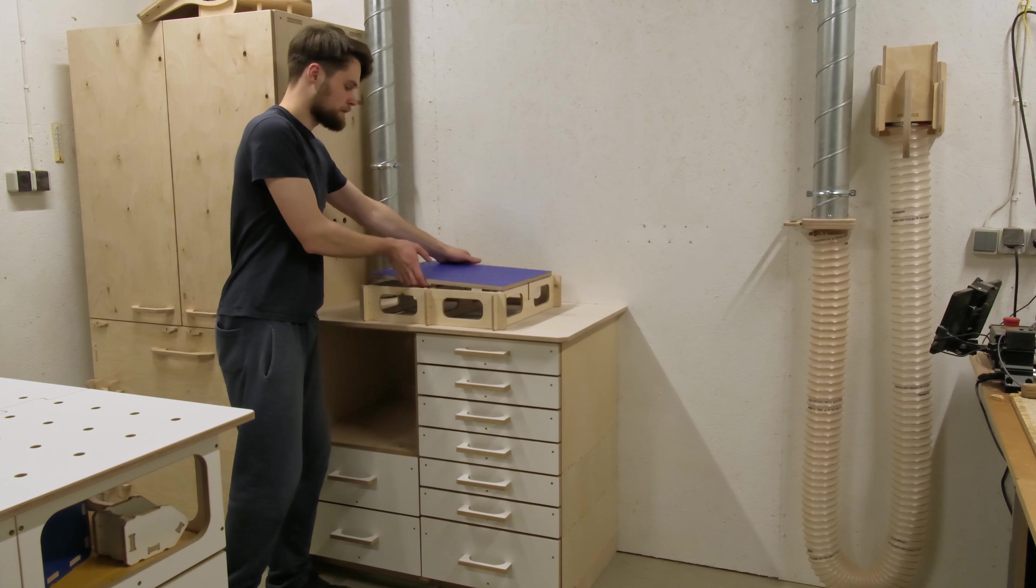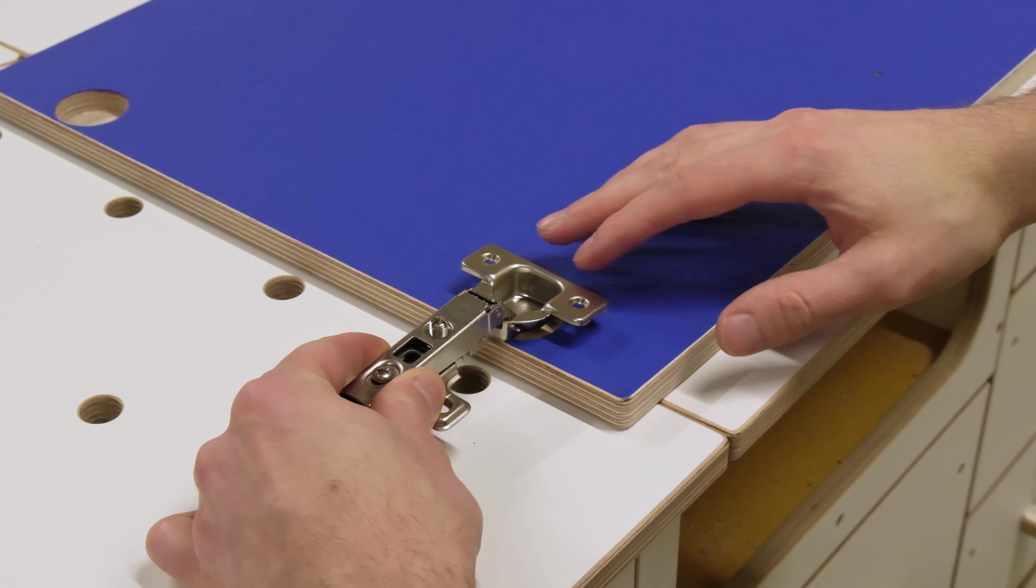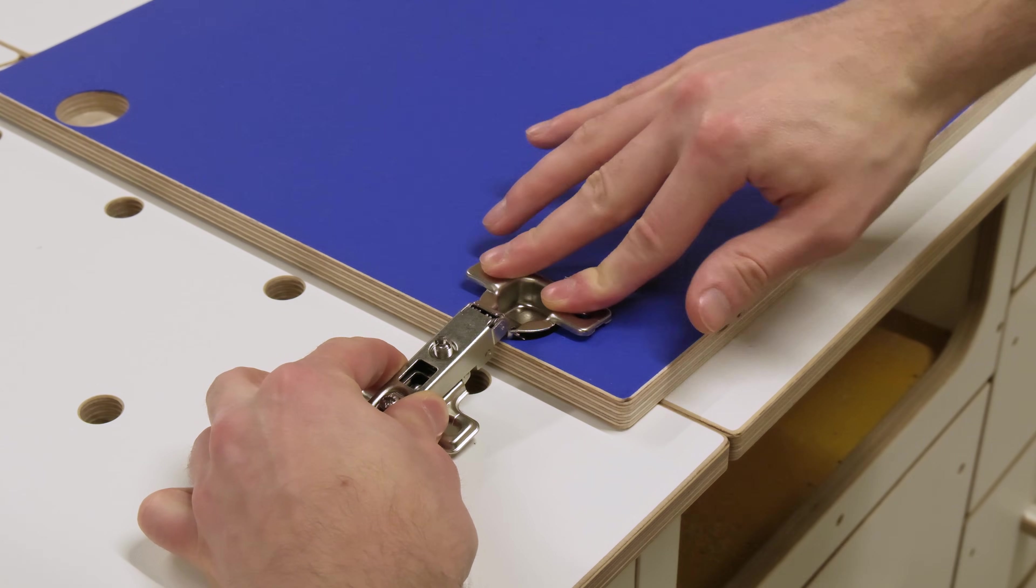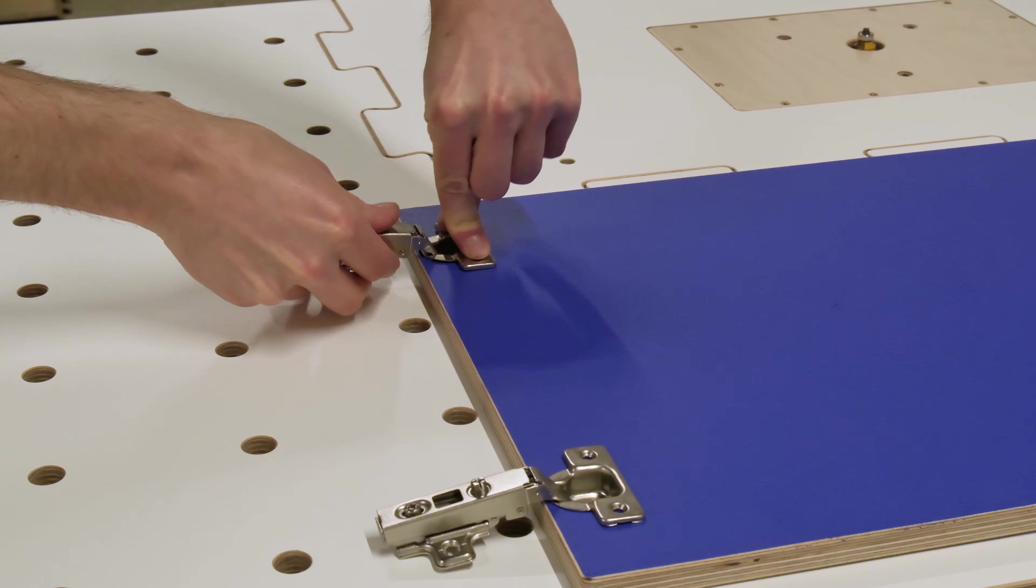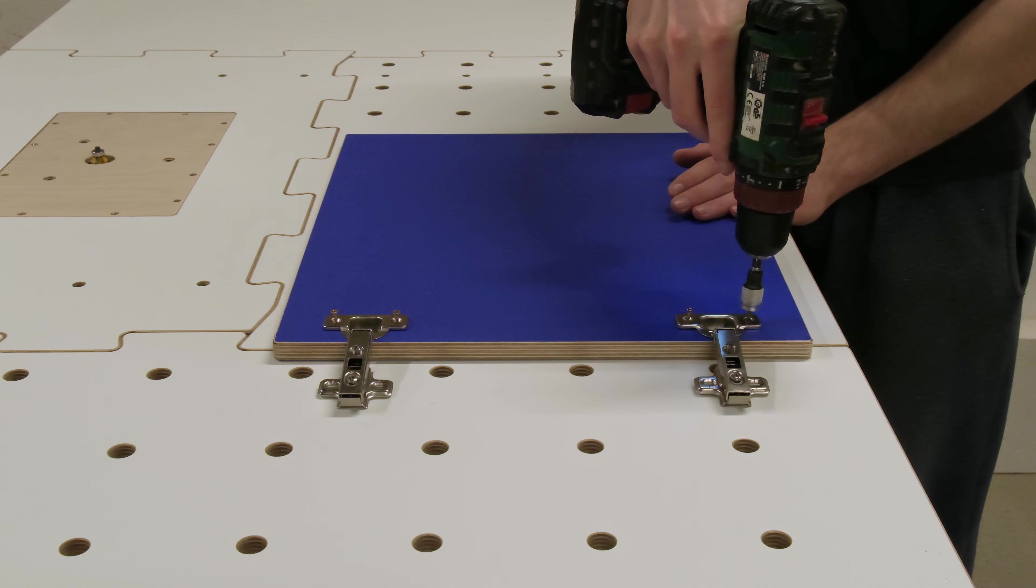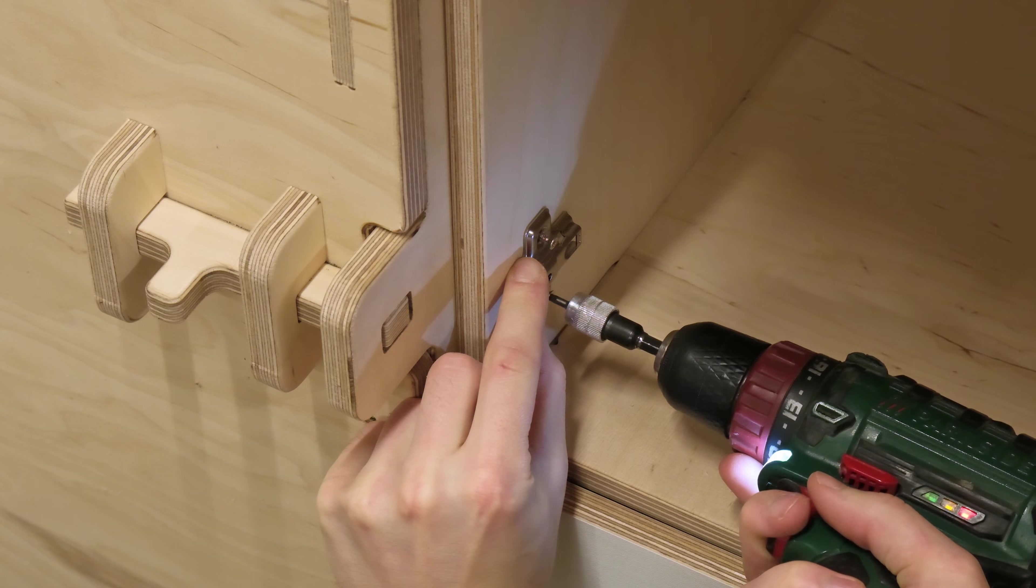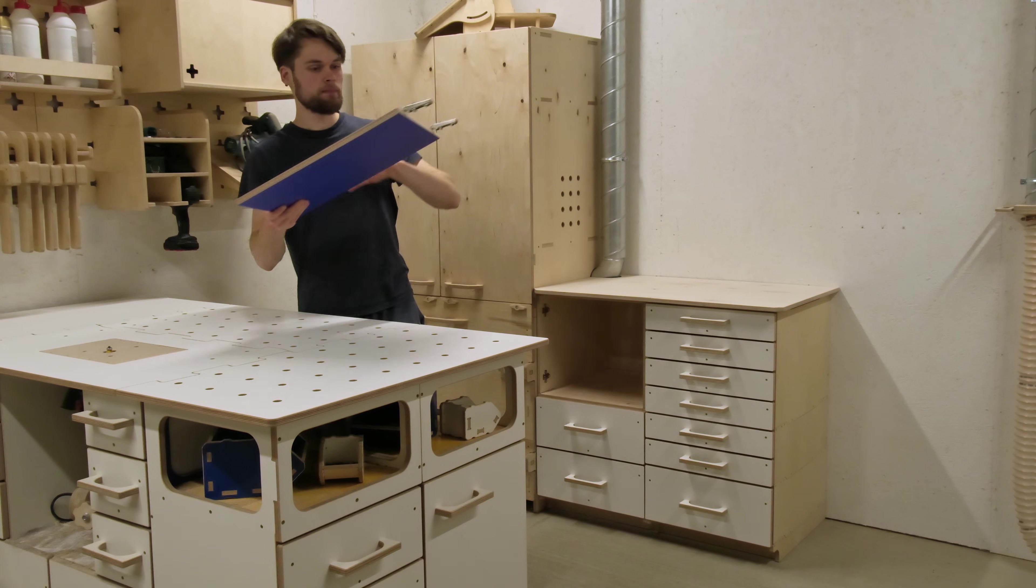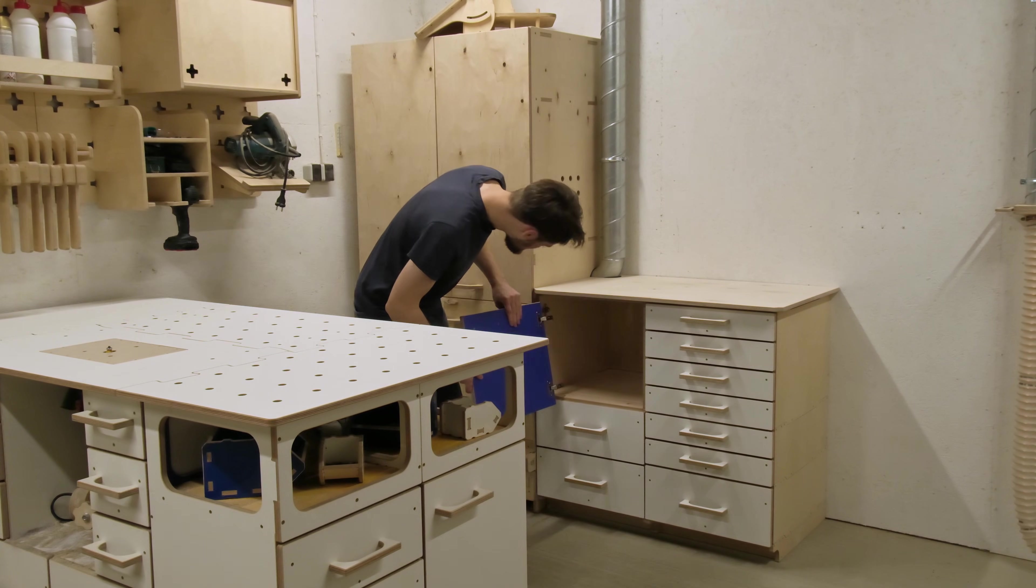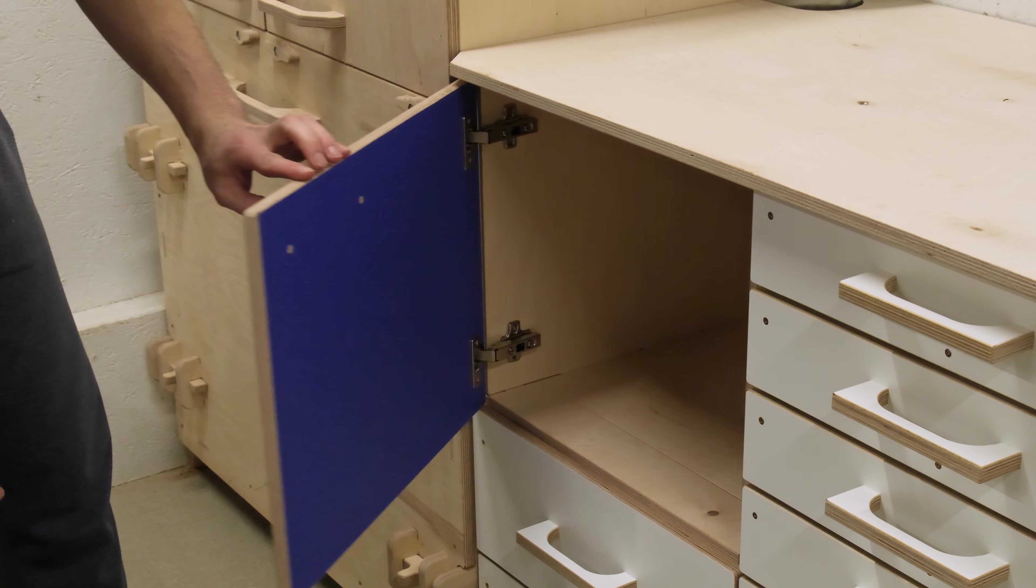When the last drawer is in place, we can attach the door panel. It requires securing the hinge fittings to the door and the cabinet wall. Now we can simply pop the door in place and add the handle.